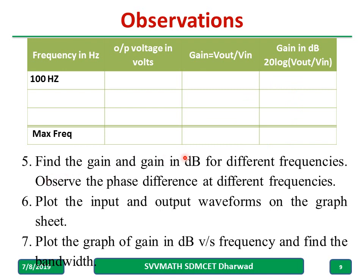Find the gain and gain in dB for different frequencies. Observe the phase difference also — at 100 Hz, is there any phase difference? Check at 1 kHz and 10 kHz as well. Plot the input and output waveforms on the graph sheet. Also plot the graph of gain in dB versus frequency and find the bandwidth.